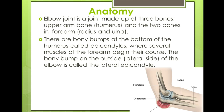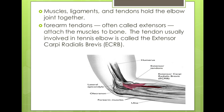The bony bumps on the bottom of the humerus are called epicondyles, and the bony bump on the outside, i.e. the lateral side, is called the lateral epicondyle. This bone and its muscles are what are affected in tennis elbow. The muscles, ligaments and tendons hold the elbow joint together. The forearm tendons are called extensors. The tendon usually involved in tennis elbow is called the extensor carpi radialis brevis.